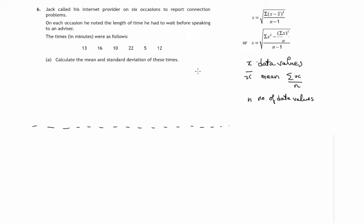So let's start working out the standard deviation, because in the process we'll be able to work out what the mean is. First of all we're going to write down the six values of x, the data values: that's 13, 16, 10, 22, 5 and 12. Let's go up to this first formula.